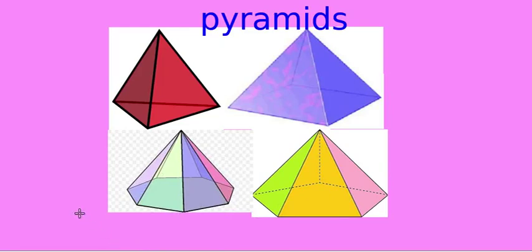The pyramid is also called an Egyptian pyramid. This is an example of a square pyramid — the Egyptian pyramid.